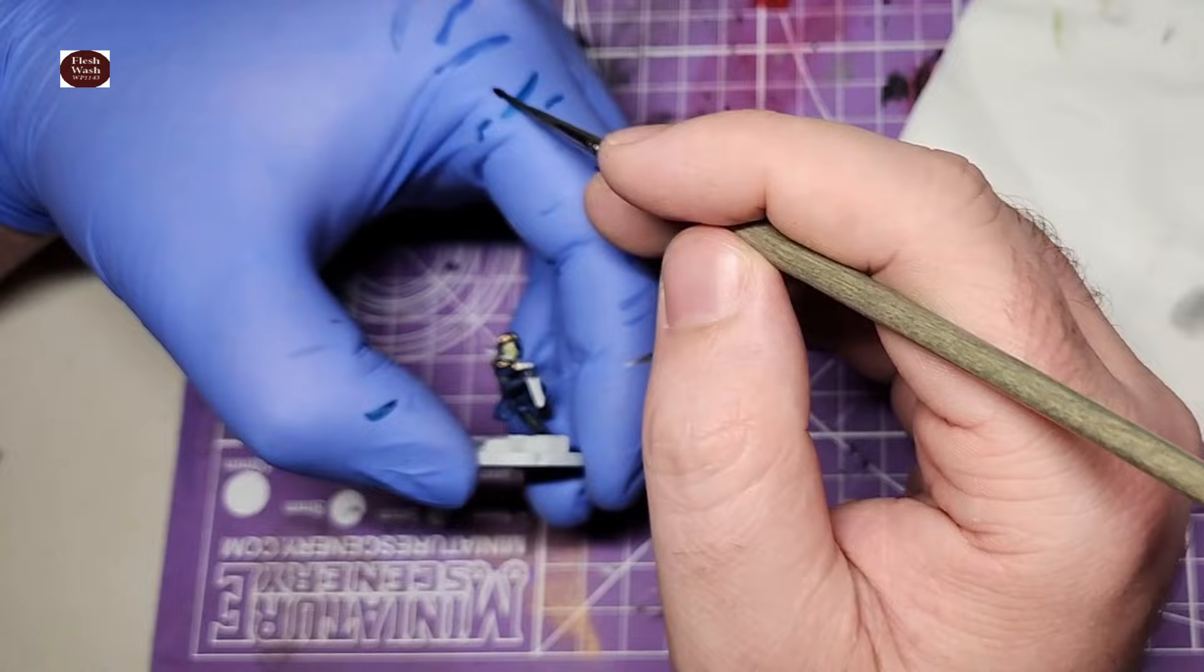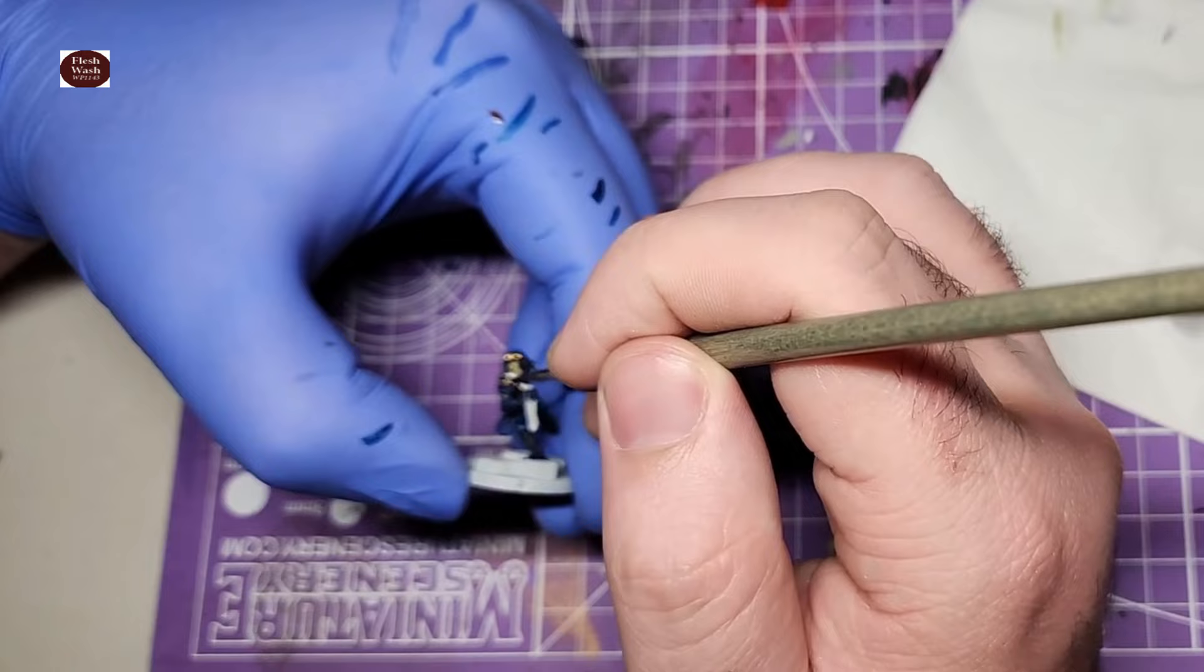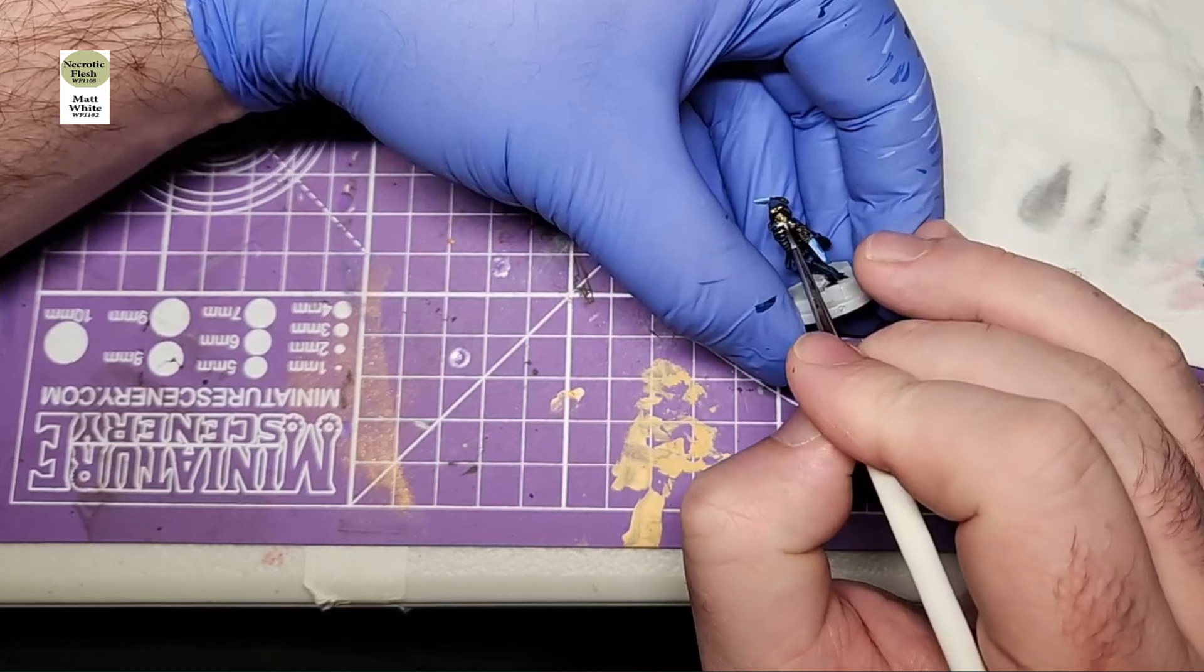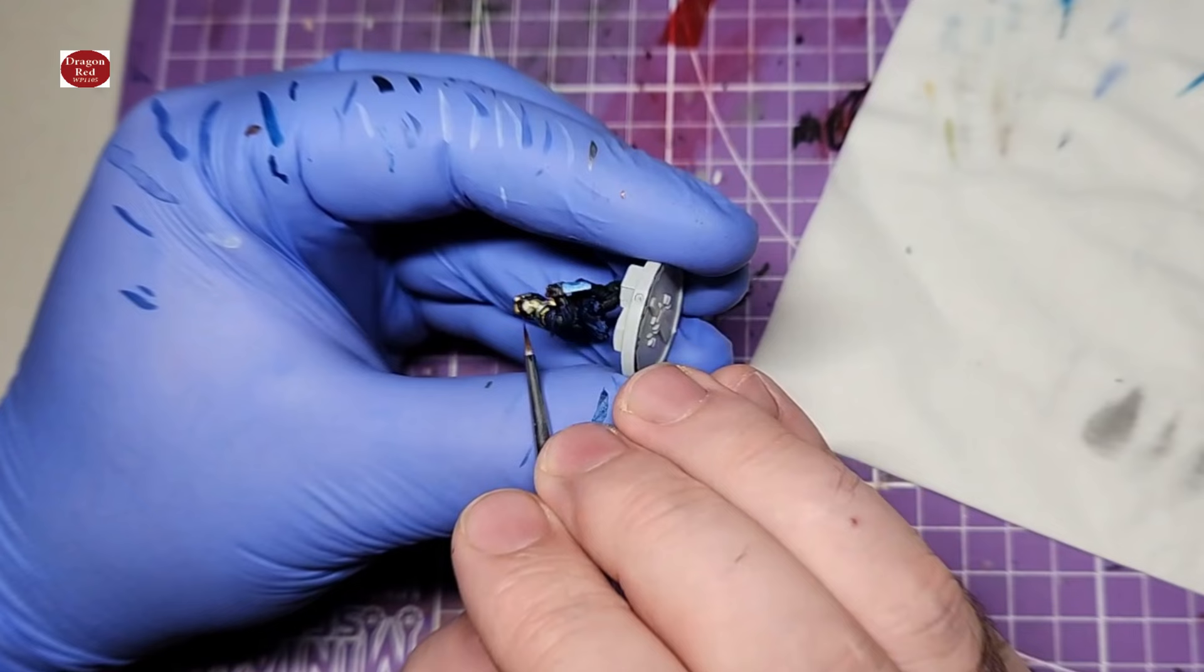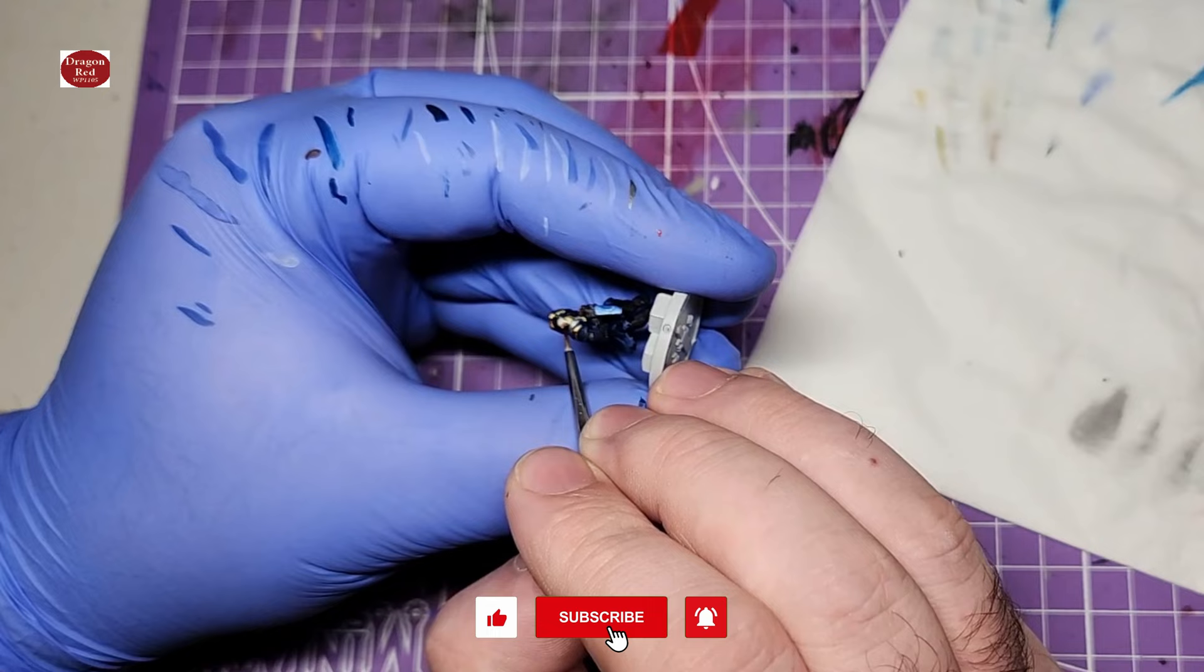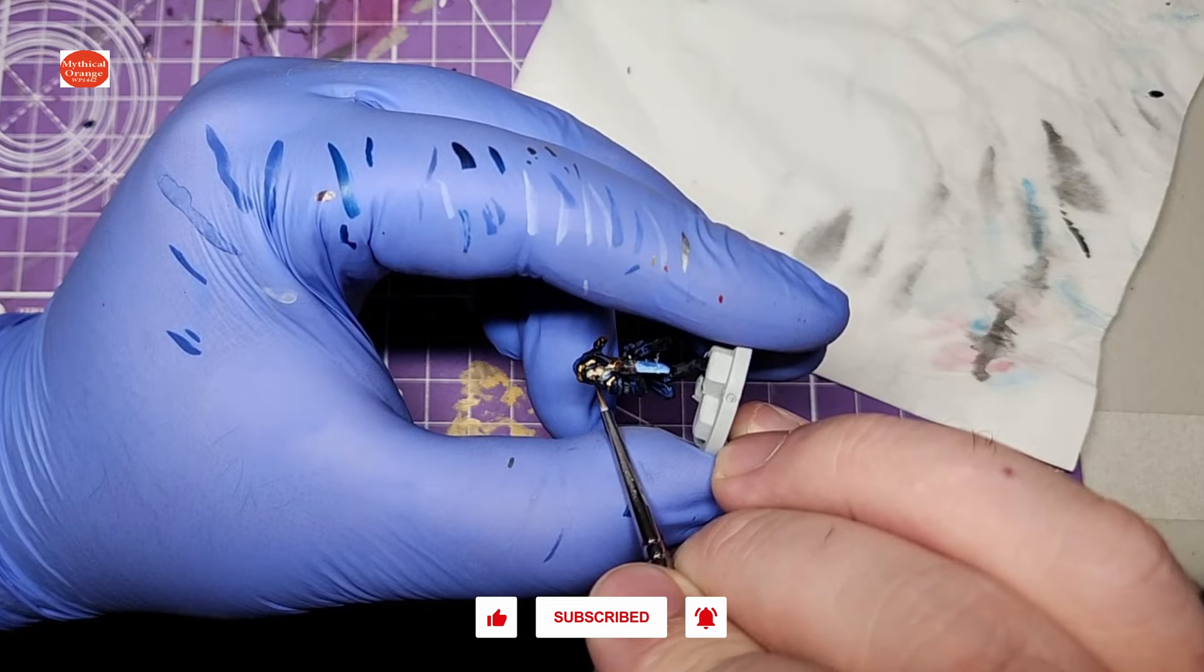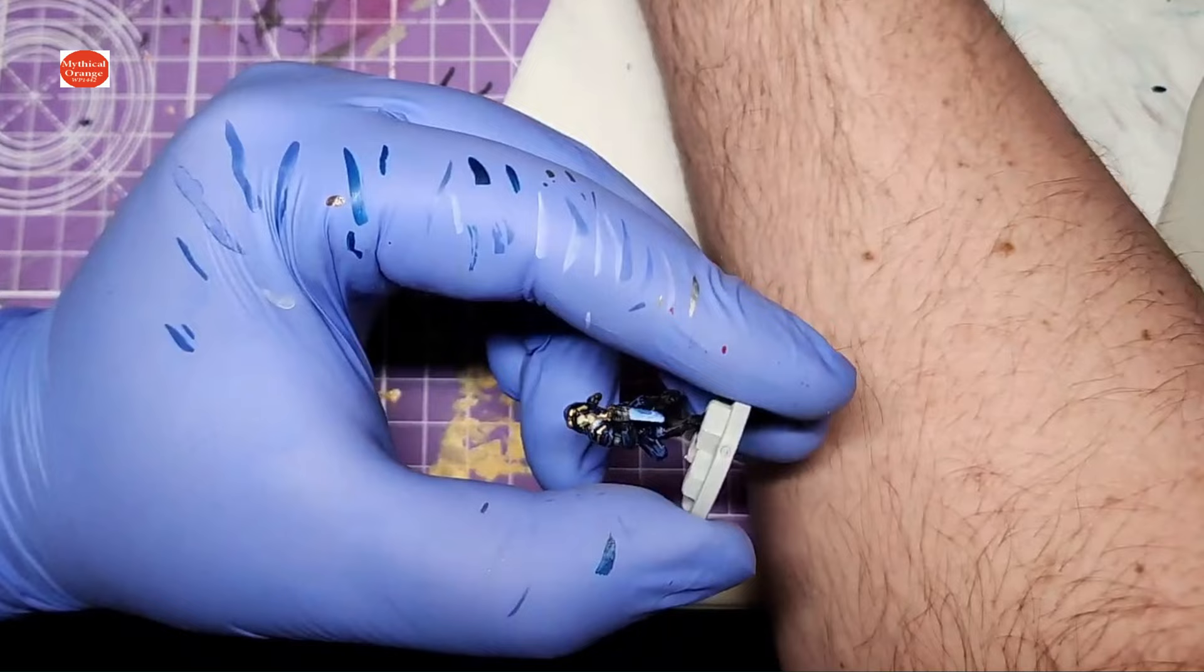Then because I still wanted to keep a bit of the fleshy tones in there, I used Flesh Wash over that. The highlights were just a 50/50 mix of Necrotic Flesh and White. In the art it looks like he's got red glowy eyes, so I started with Dragon Red for the eyes, and then just a dot of Mythical Orange to make them really pop.